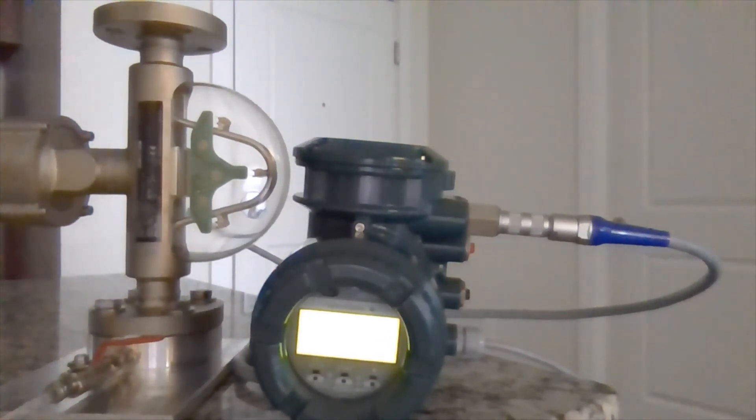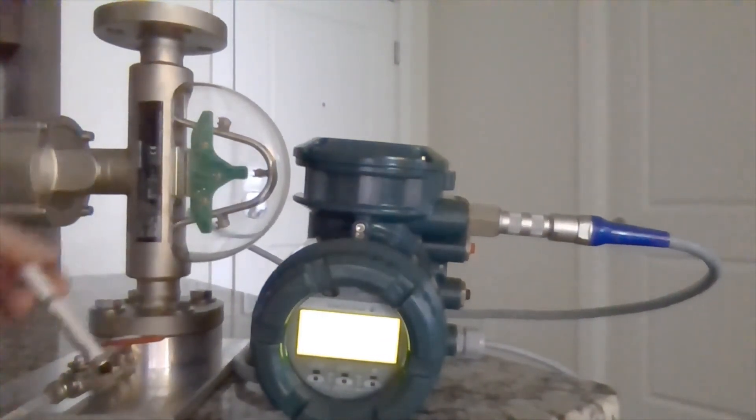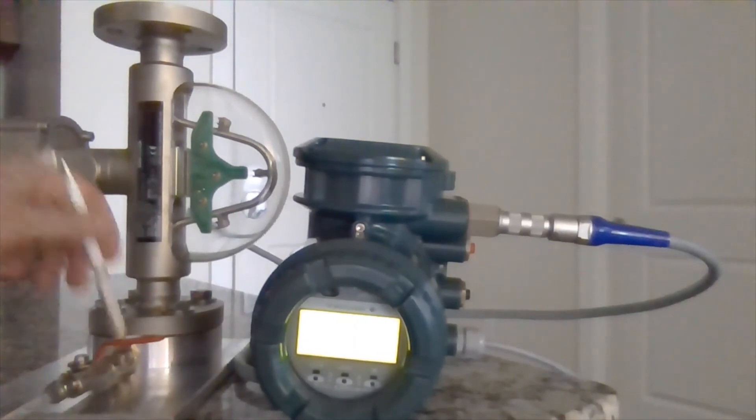If you look over here, I've connected a quarter inch line to the inlet of this demo meter body for the Coriolis. I'm going to open up this valve and we're just going to push a little water through. You can see that we went right up to 8.1 kilograms an hour, and now we're going back in a negative direction.